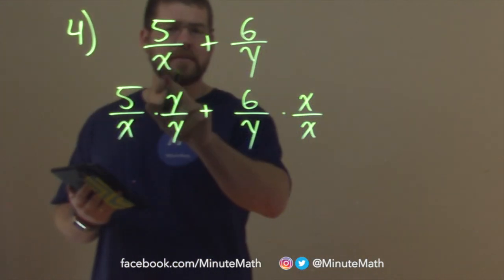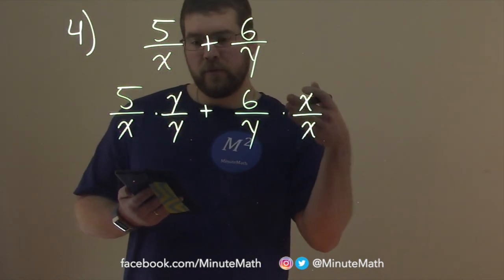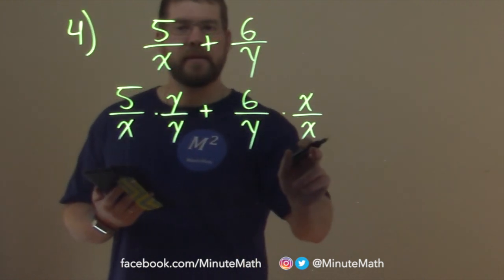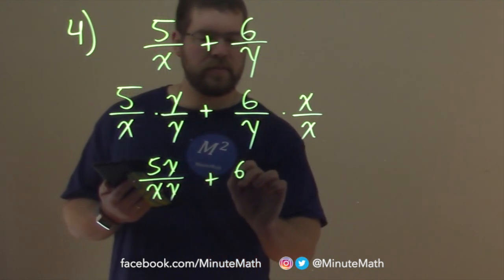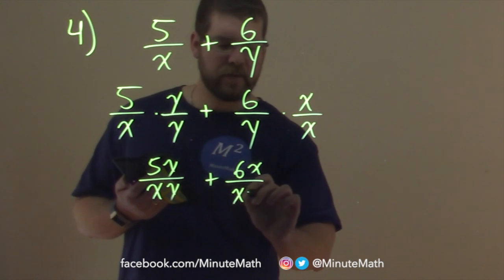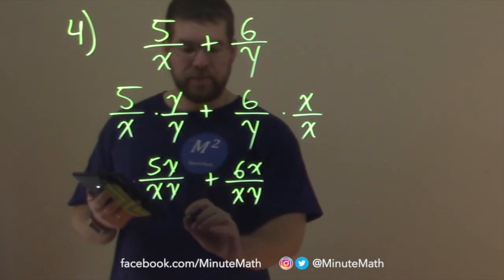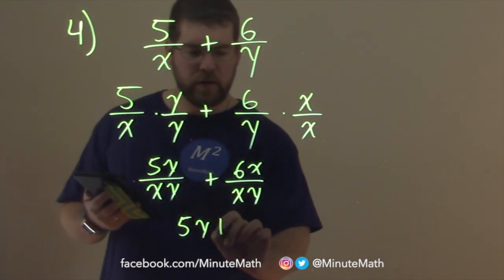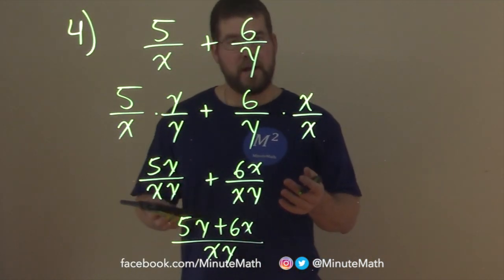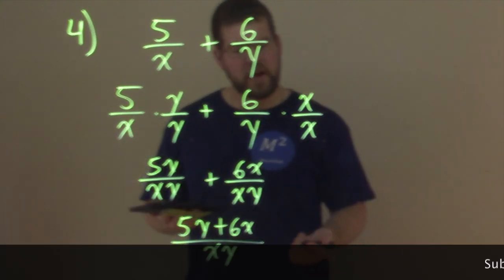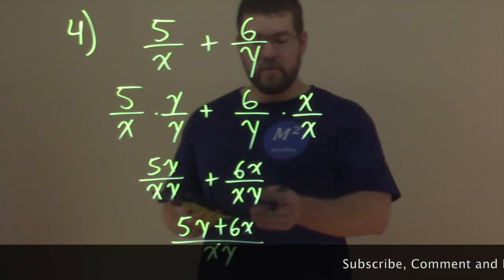And how I got that, I looked at the two denominators and asked how can I basically multiply a variable over itself to get a common denominator. So now we have 5y over xy plus 6x over xy. And now we have a common denominator, so we just have to bring it together. We have 5y plus 6x over xy. And there we have our answer. Some people will rearrange and have x come first at the top, and have 6x plus 5y. It's really up to you.